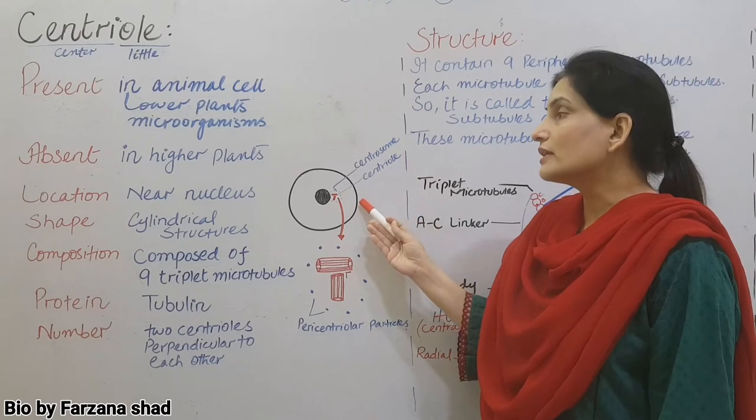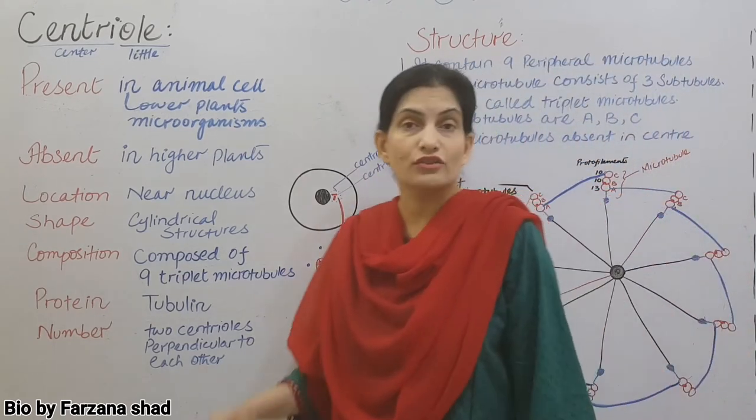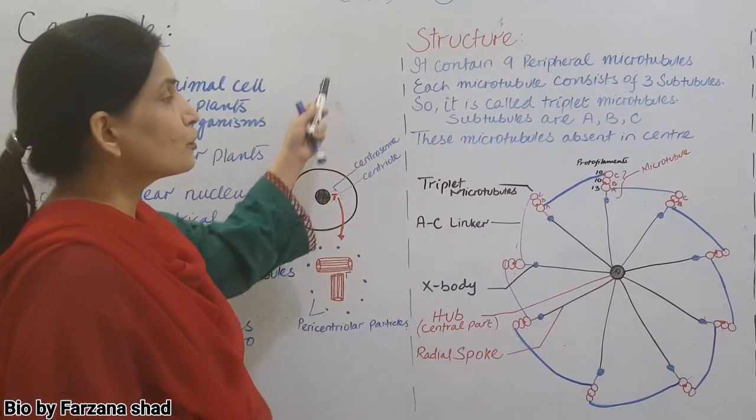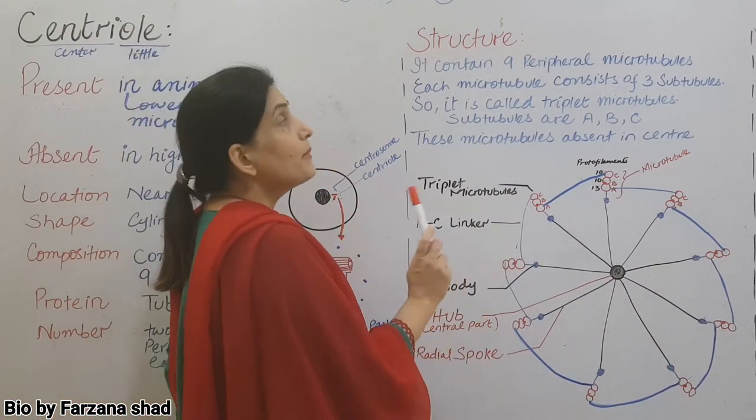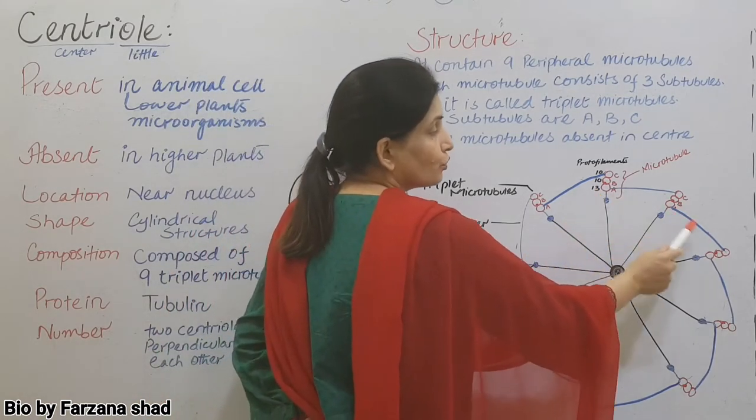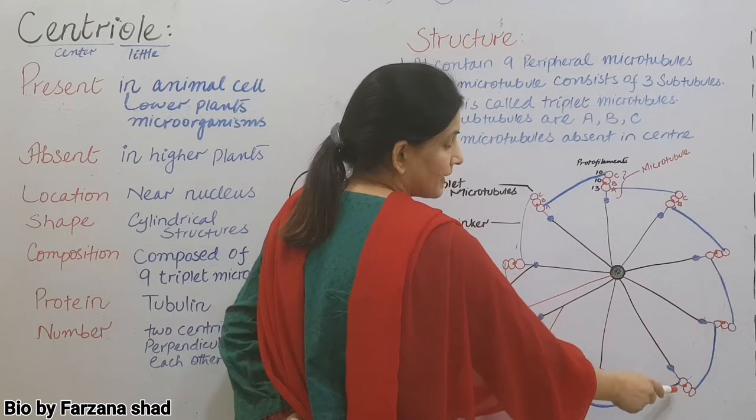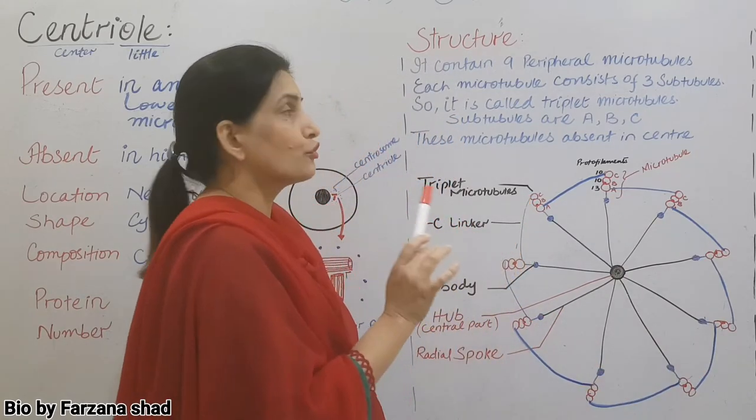Which cells it's in, where is the location, and what is the shape. Let's start discussing the structure. If we discuss the structure, it consists of nine peripheral microtubules. See 1, 2, 3, 4, 5, 6, 7, 8, 9. Nine microtubules.